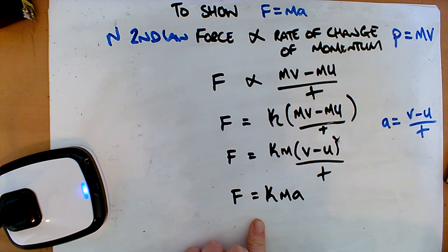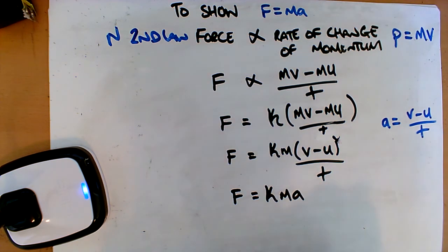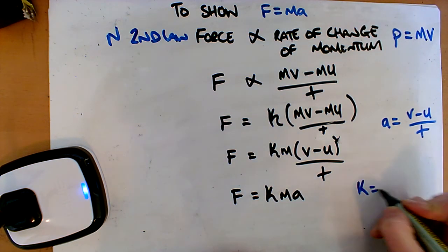We're expecting this. We know that F is equal to Ma. So here's this K, and this is the thing. The way we can get rid of this, we just make K is equal to 1.